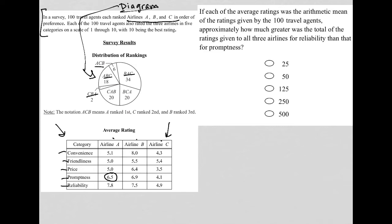If that's the average of 100 travel agents, then really what we have is 6.5 times 100, which is 650. So what we would really have on this row is 650, 690, and 410. That would give us the total of the ratings. Hopefully that makes sense.